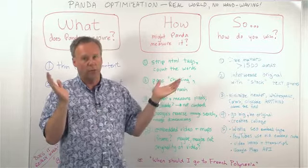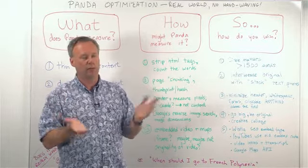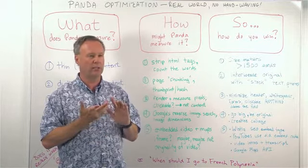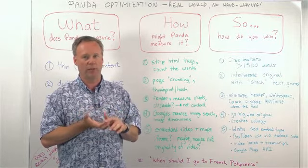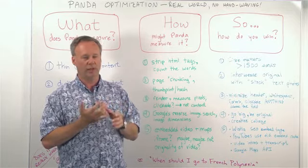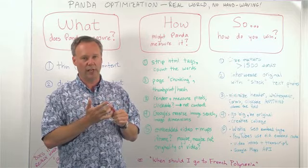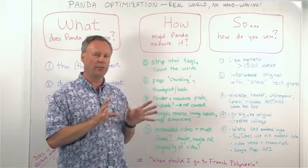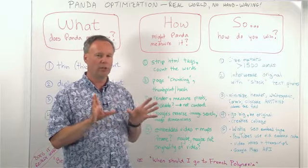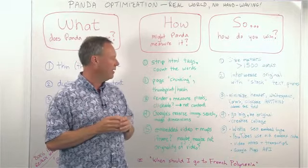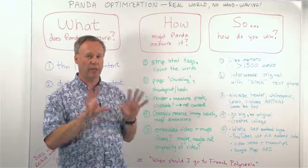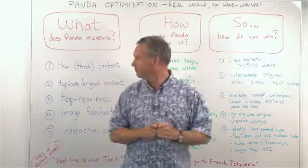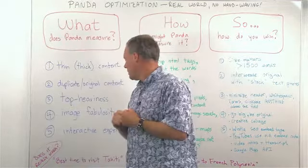Another question: what counts as above the fold? We don't know for sure, but we can guess. Since the vast majority of people are running browsers at better than 1280 by 1000, that's probably a good benchmark. If you're analyzing your own site, look at it at 1280 by 1000 — that's most likely about the dimensions Google is looking at for above the fold.